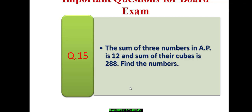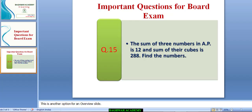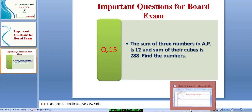The sum of three numbers in AP is 12 and the sum of their cubes is 288. Find the numbers. We have this question: the sum of three numbers in AP is 12 and sum of their cubes is 288. We need to find the numbers.